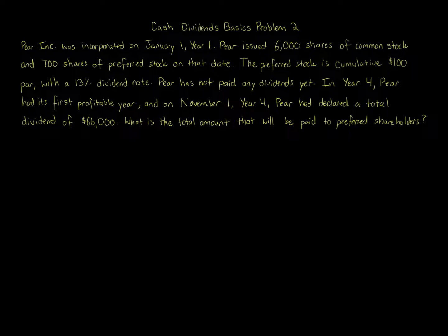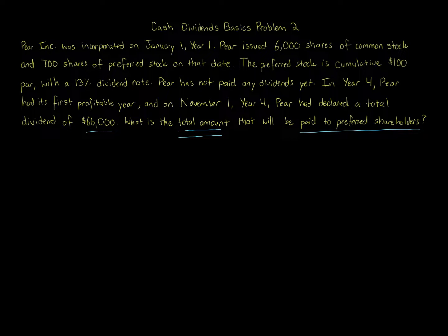What is the total amount that will be paid to preferred shareholders? Dividend problems can be quite challenging, but we're going to make it simpler. Remember: if you're not specifically told it's a stock dividend, assume it's a cash dividend. You'll see the dollar amounts — for example, in year four, pair declared a total dividend of $66,000, which is cash. Also note it asks for the total amount, not the amount per share.